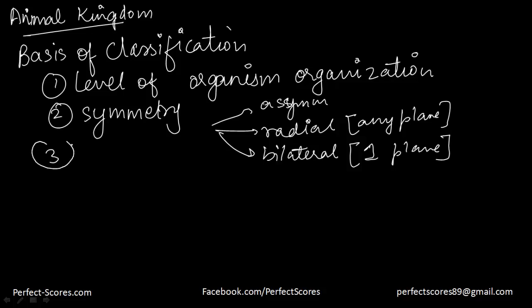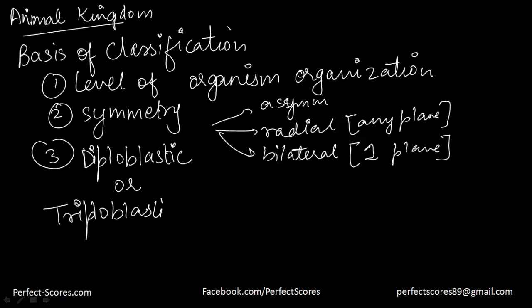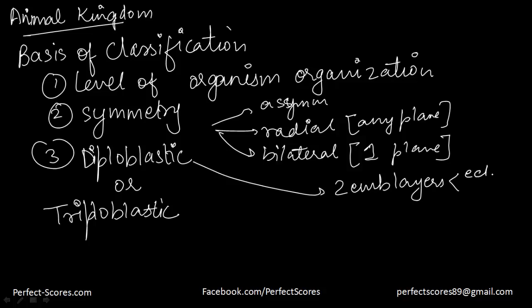Another factor is the germ layer organization. It can be diploblastic or triploblastic. In animals where cells are arranged into two embryonic layers — the ectoderm and endoderm — those are called diploblastics, for example coelenterates. But in other animals, differentiation is further into a third layer, including human beings — that is triploblastic, which means apart from ecto- and endoderm, there is one more layer called the mesoderm.